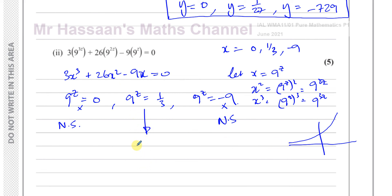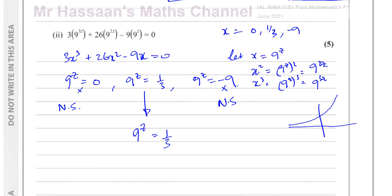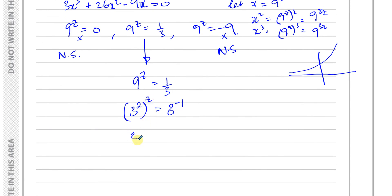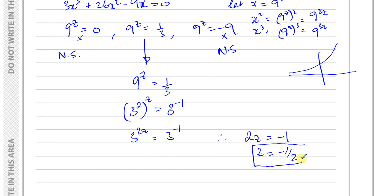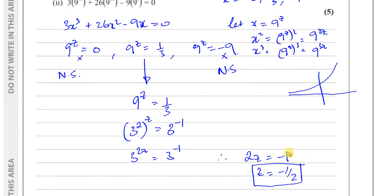To solve 9^z = 1/3 without logarithms, we make the bases the same. We write 9 as 3², so 9^z = (3²)^z = 3^(2z). And 1/3 = 3^(−1). So 3^(2z) = 3^(−1), and since the bases are equal the powers must be equal: 2z = −1, therefore z = −1/2. That is the only solution.